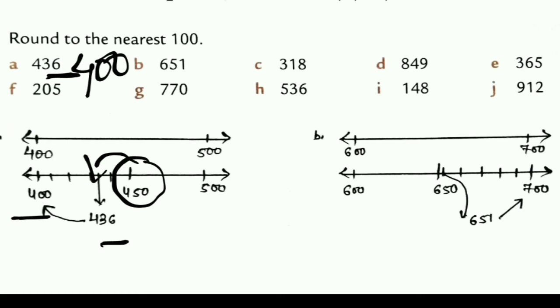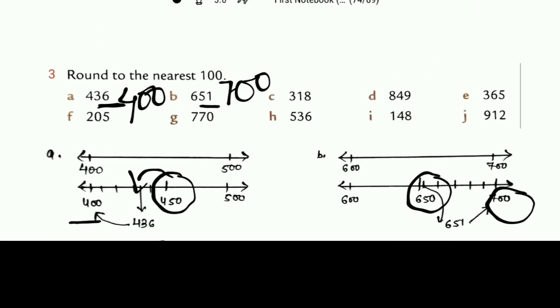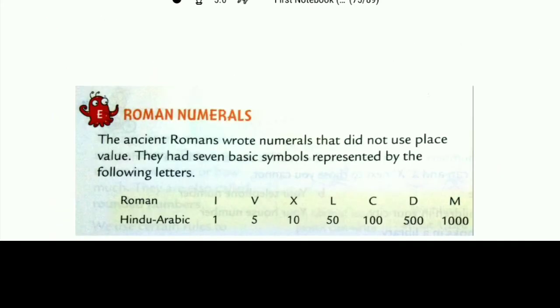Next, 651. 651 means 600 and 700. Mid value is 650. Our question is 651. So it is more than mid value. This will go to next number, that is 700. Got it? Rest questions, do it yourself.